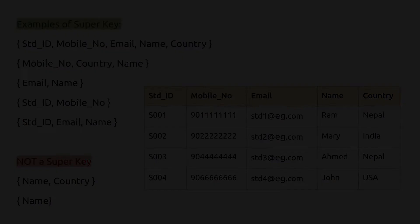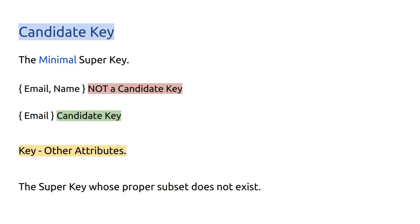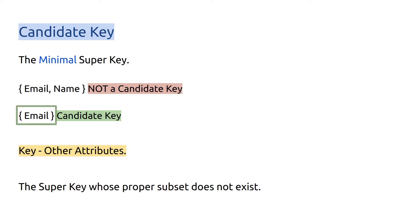Now let's look at candidate key. Candidate key is the minimal super key. Minimal here means that we remove all the unnecessary attributes — that is, the attributes which do not help to identify each record uniquely. In this example, name has no role to play in uniquely identifying a record, but email is unique so email can be a candidate key. Essentially, candidate key is the key minus unnecessary attributes. The more academic definition is: a super key whose proper subset does not exist is a candidate key.